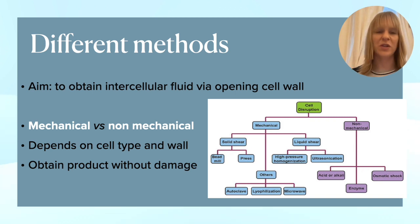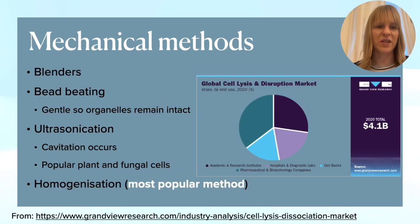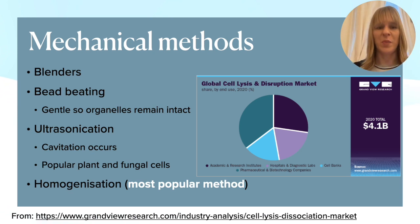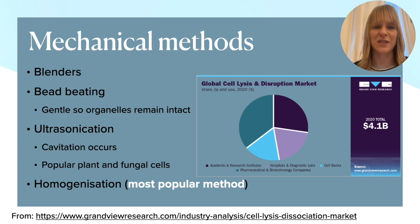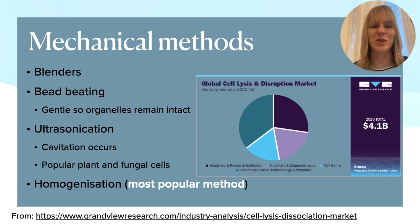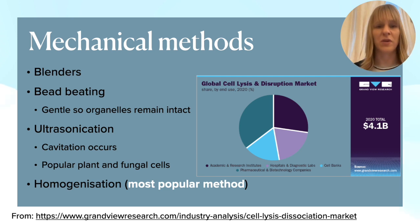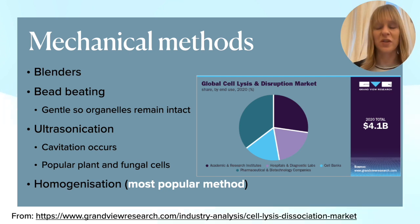The mechanical option is what we'll talk about first, to go into a little more detail on what options you have. Here you see a picture of the market — the global market for cell lysis and disruption is tremendous, said to be over $4 billion by 2020. We're mainly talking about the pharmaceutical industry, but as you can see from the graph, lots of other industries benefit from these methods too.